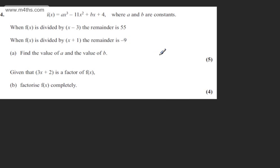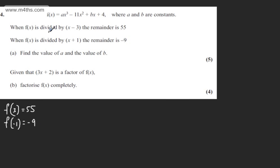The question carries 5 marks. I'm going to use the Remainder Theorem here and state that f of 3 will be equal to 55 and f of minus 1 will be equal to minus 9. I'm going to substitute these values through f of x and set up simultaneous equations, which will allow me to solve for a and b. Starting now with f of 3.